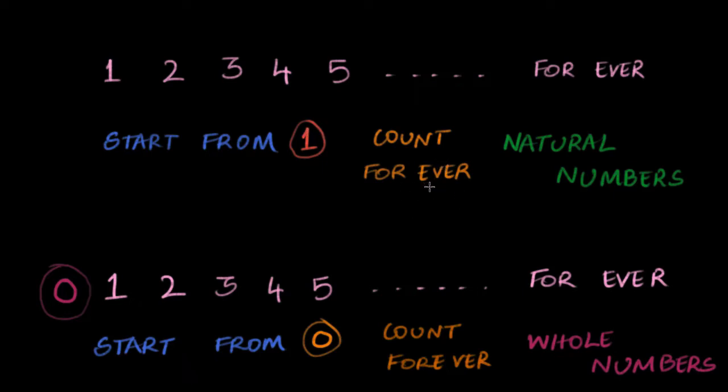Another way to say the same thing is that natural numbers is that family of numbers that contains all the numbers from one and keeps going forever and ever.